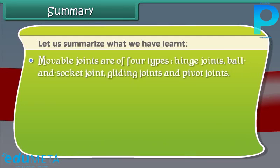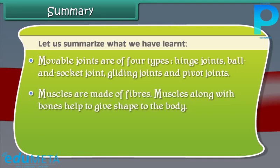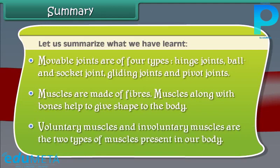There are two types of joints: moveable and immovable joints. Moveable joints are of four types: hinge joints, ball and socket joints, gliding joints, and pivot joints. Muscles are made of fibers and, along with bones, help to give shape to the body. Voluntary muscles and involuntary muscles are the two types of muscles present in our body.